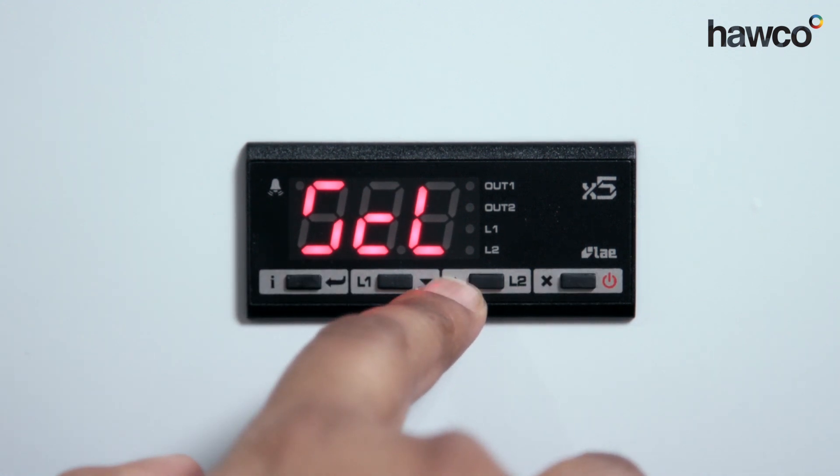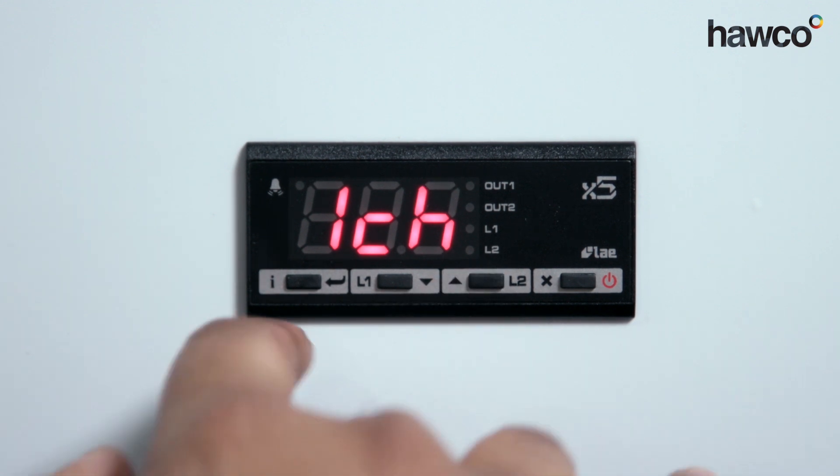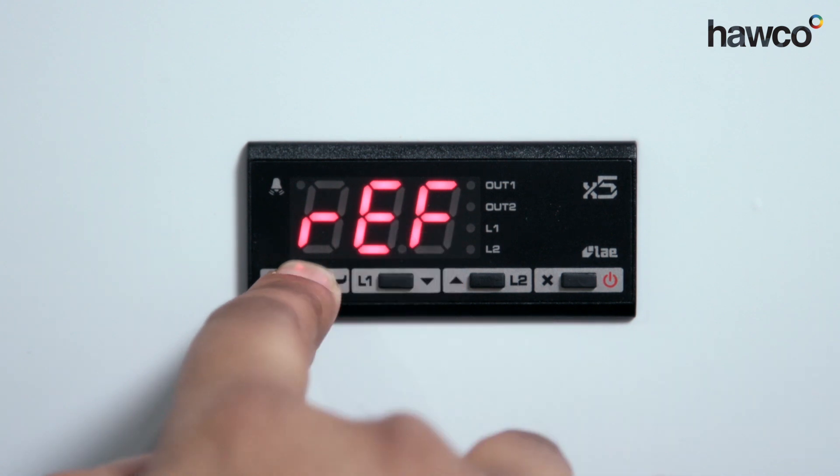When we're setting up the dead band, the first one we're going to go to is 1CH. Push and hold the I button. We're going to change this from being heater to a refrigerator.